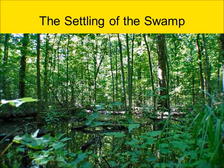An 1817 treaty signed at the foot of the rapids near Maumee began the formal process of white settlement in the region in and around the Great Black Swamp. In that treaty, Native Americans gave up all rights to lands in Ohio, with the exception of nine fairly small reservations. The former Indian lands were then auctioned at a sale held at Fort Meigs.